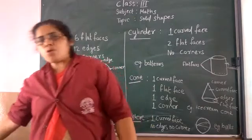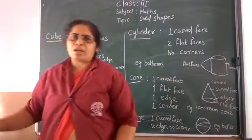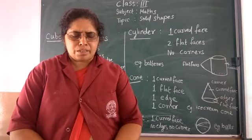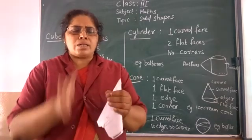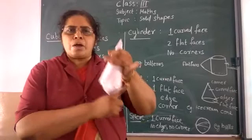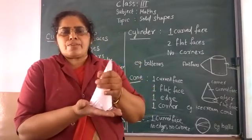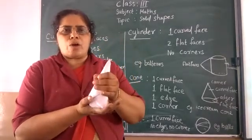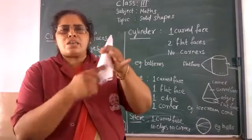Now the cone. You might have seen an ice cream cone. Let me show you my cone — this is the cone. Here, there is 1 corner at the tip, and there is a curved face on the side. At the base there is 1 flat face, and there is 1 edge where the flat face meets the curved face. So a cone has: 1 edge, 1 flat face, 1 curved face, and 1 corner.